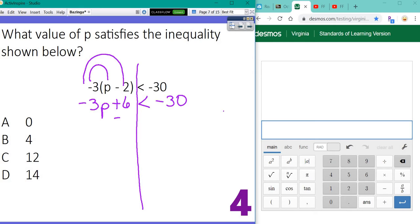Minus 6. We have to subtract 6 on both sides. So we're going to bring down negative 3P is less than, and if you put this in decimals, negative 30 minus 6 is negative 36.